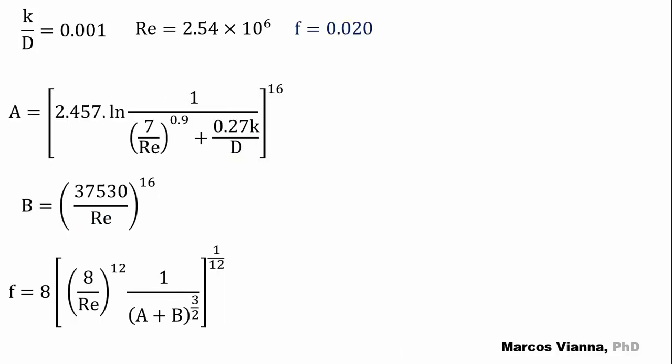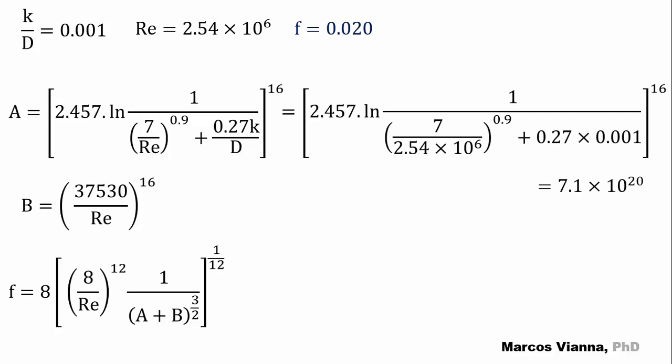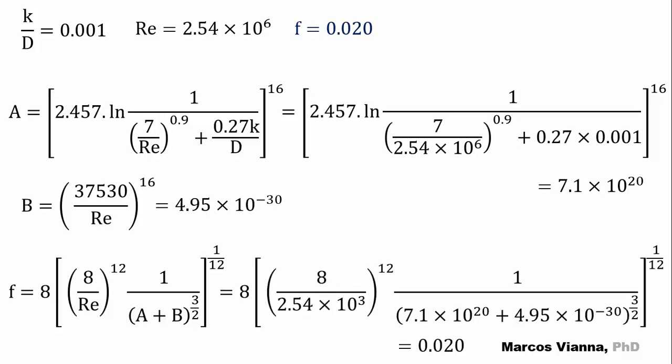Let's solve using the Churchill formula. First, we calculate A, then we calculate B, and this is what we find for f, the same value that we found on the Moody diagram.